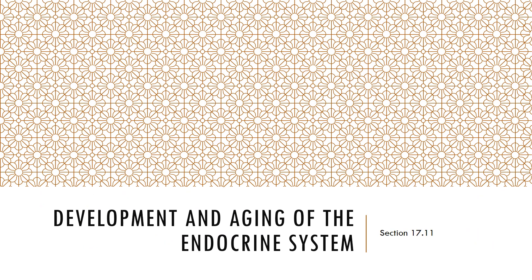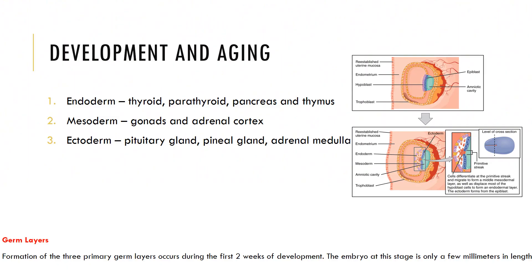Regarding the development and aging of the endocrine system: the endoderm produces the thyroid, parathyroid, pancreas, and thymus. The mesoderm gives rise to the gonads and adrenal cortex. The ectoderm gives rise to the pituitary, pineal gland, and adrenal medulla.